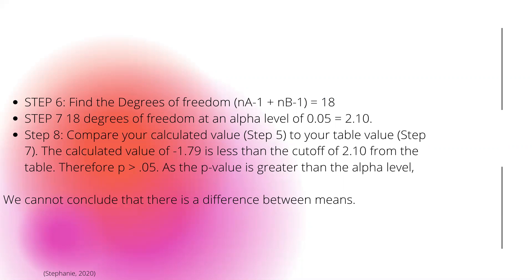Step eight is to compare your calculated value from step five to your table value from step seven. The calculated value is negative 1.79, which is less than the cutoff of 2.10 from the table. Therefore, our p-value is 0.05. As the p-value is greater than the alpha level, we cannot conclude that there is a difference between the means. That is how you solve for independent T-tests.